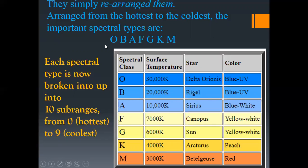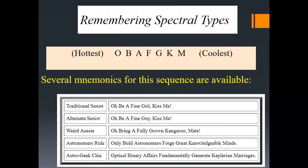For example, within O-type stars there are sub-types O0 through O9, with O0 being the hottest and O9 the coolest among O-type stars. Delta Orionis is an O-type, Rigel is B-type, Sirius is A-type, and Betelgeuse is M-type. From the spectral class you can determine a star's surface temperature. You can remember these spectral types with the mnemonic: 'Oh, Be A Fine Girl, Kiss Me' — O being the hottest and M being the coolest.